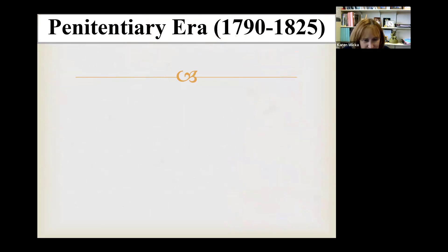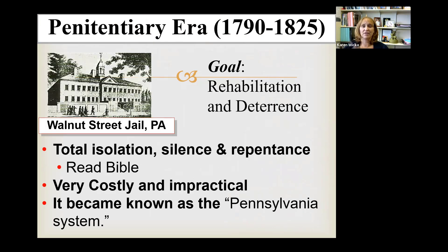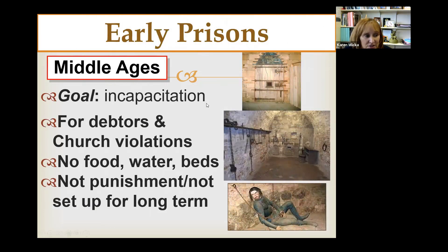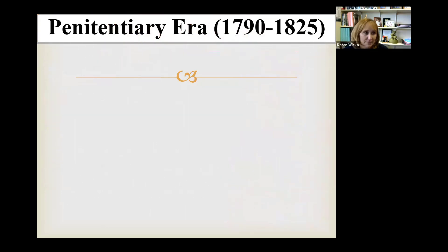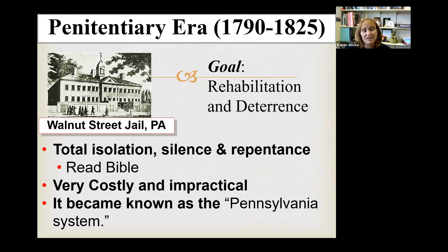The first time you can think of a prison in the manner we think of one today is what we call the penitentiary era. Going back to the Middle Ages, the sole goal was incapacitation — just holding you while waiting for a further form of punishment. The penitentiary era is really the first time they actually built a structure solely to house people in a prison setting for a longer period of time.